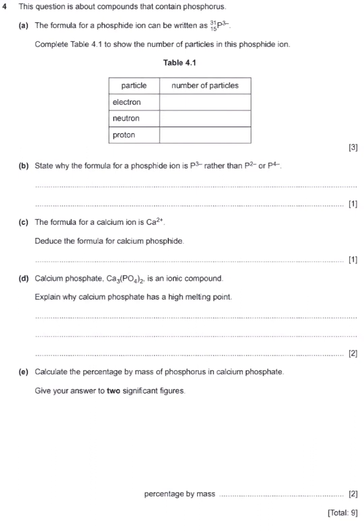Before I go any further, let me explain this part. Whenever you see a negative on top of an element symbol — for example, O with two negatives on top — that tells you it is a non-metal. Metals lose electrons. Non-metals gain electrons from metals.